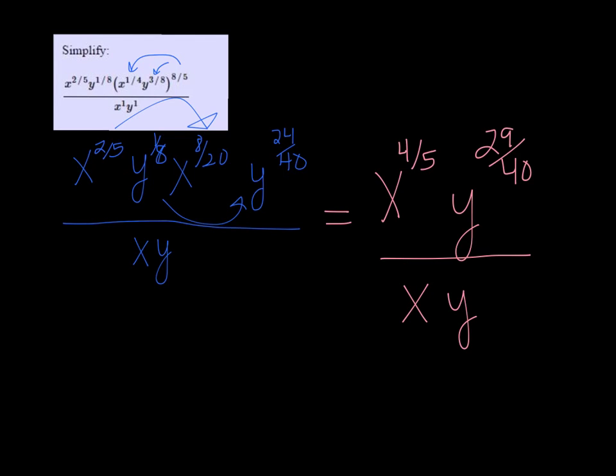Then finally, we're going to subtract. So these are ones, so I need to do four-fifths minus one and 29 over 40th minus one.